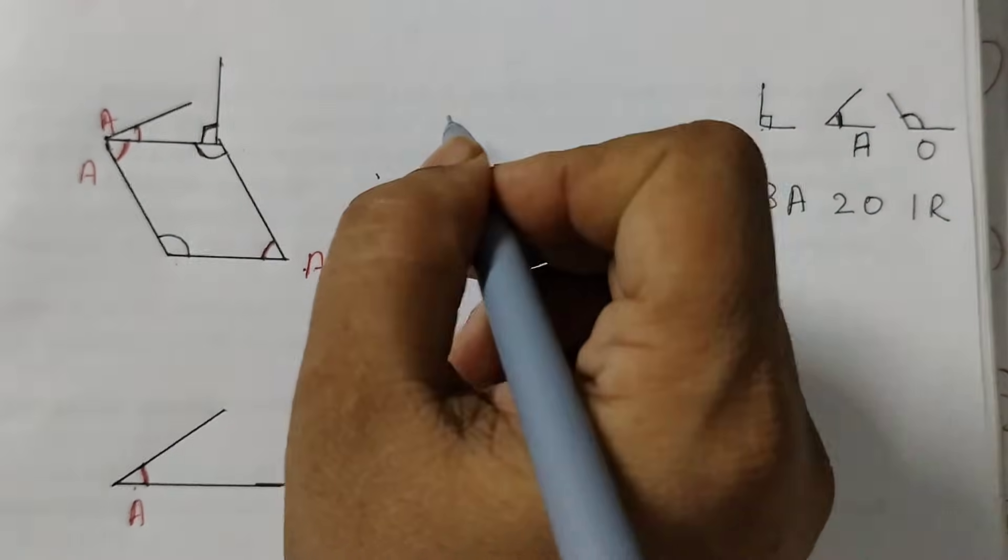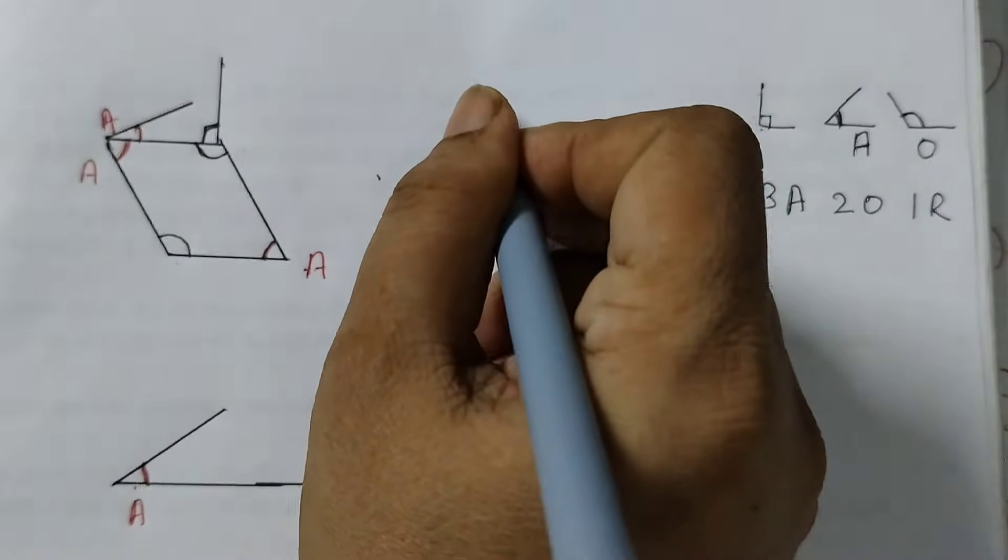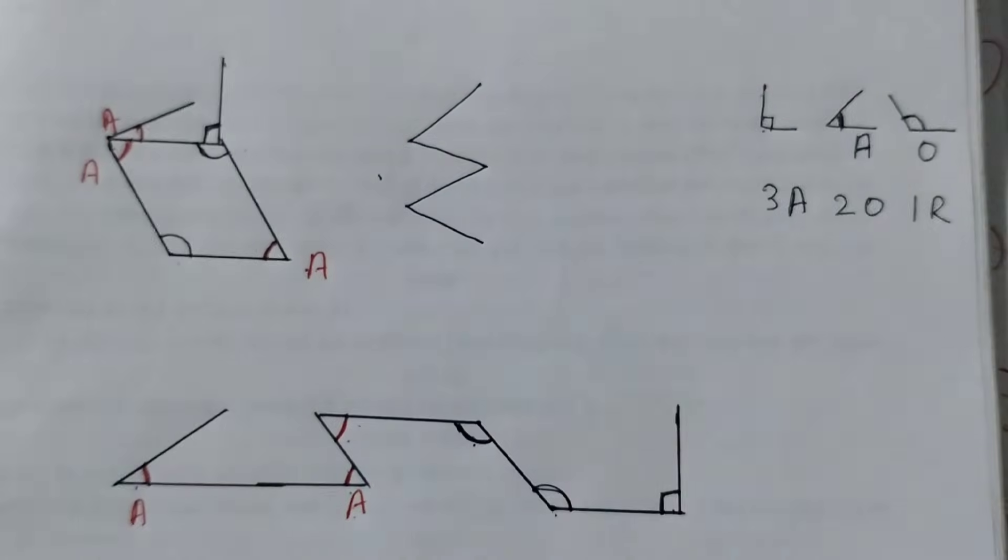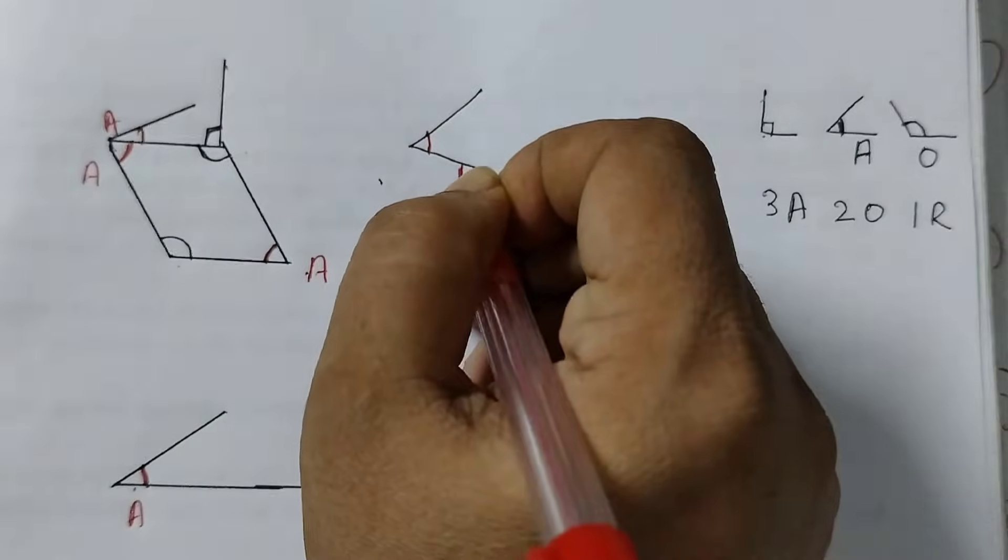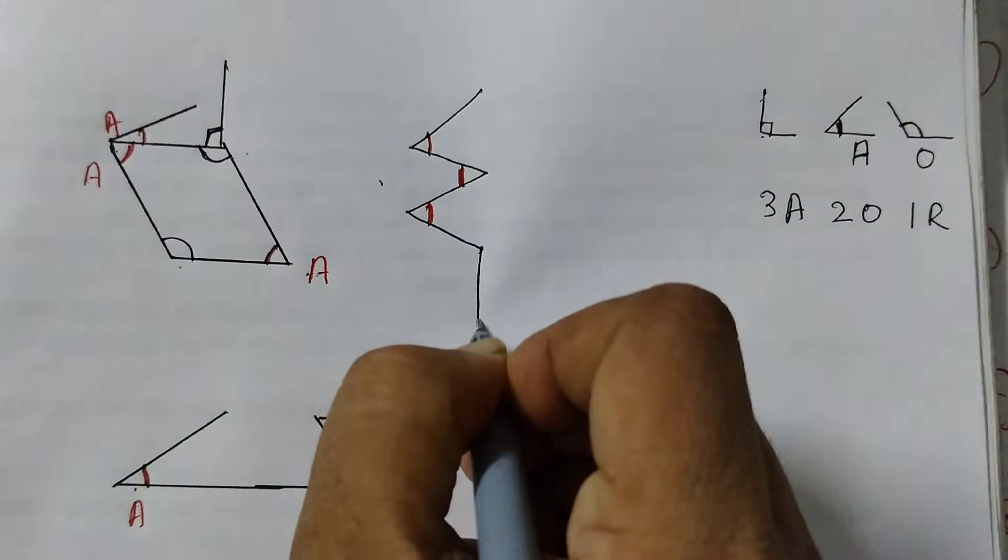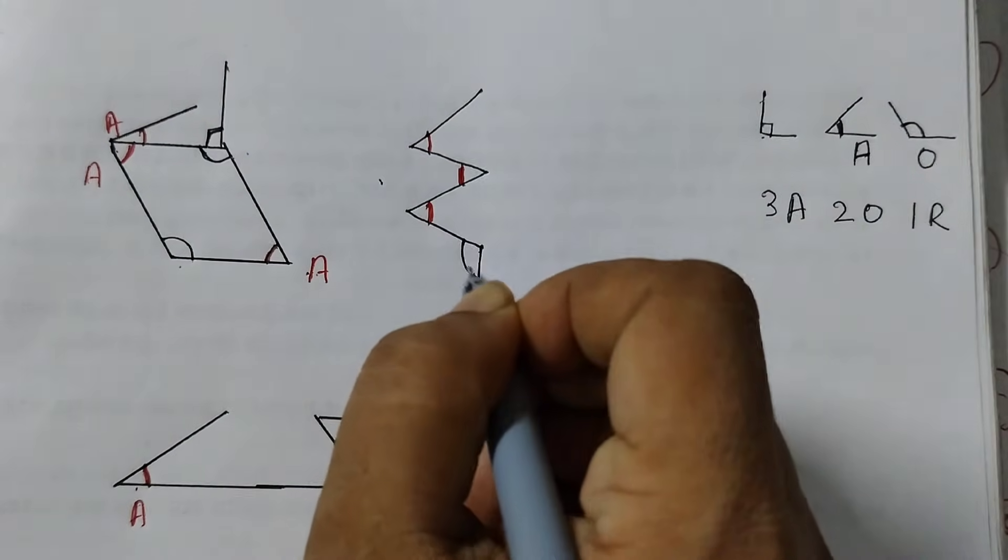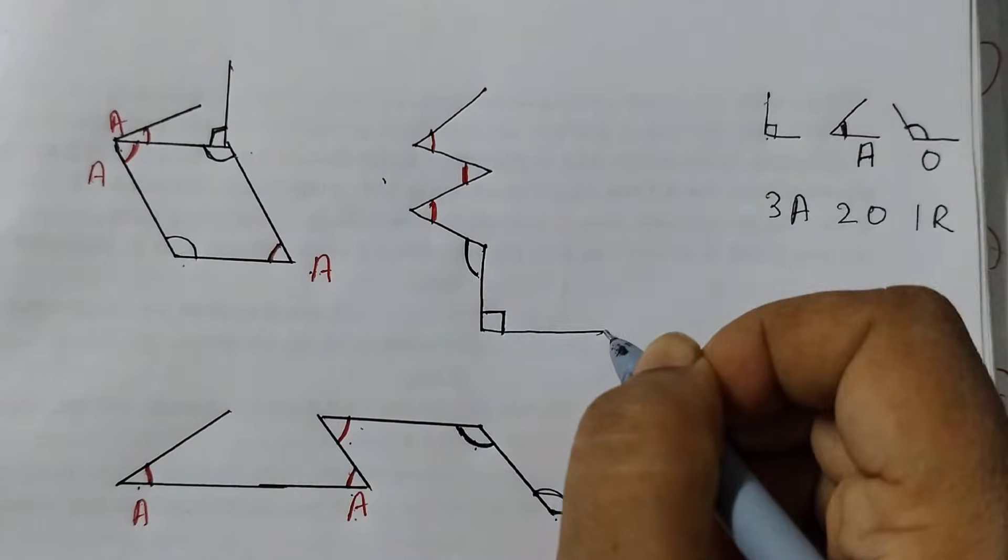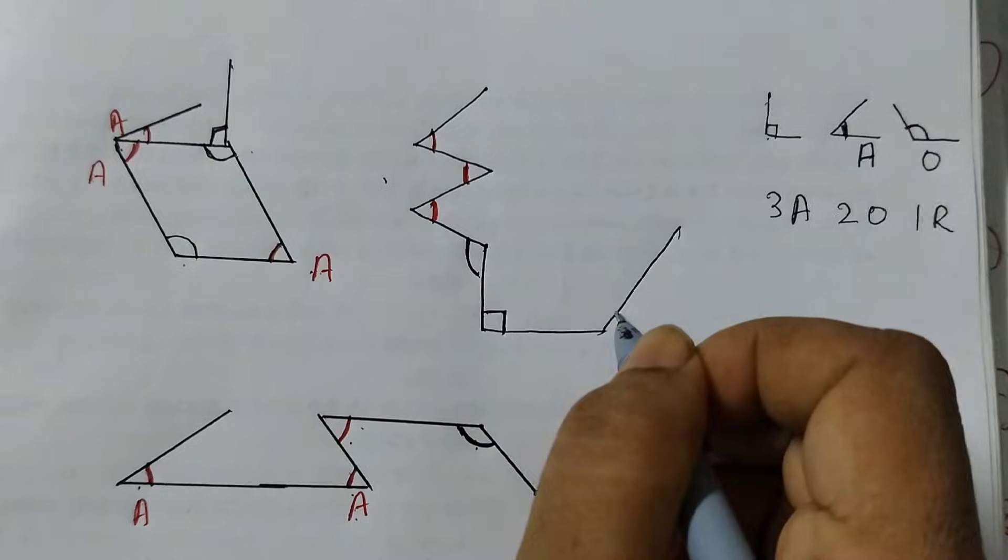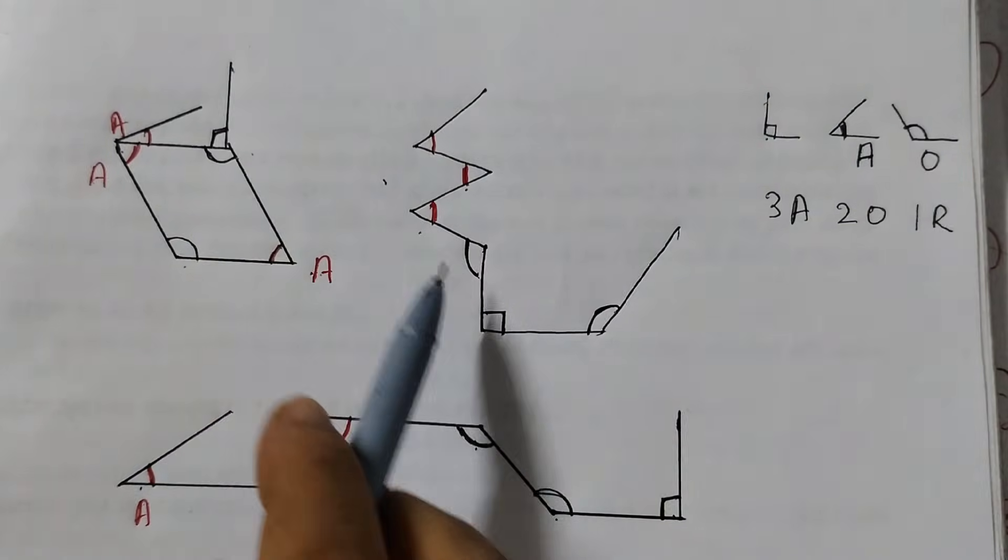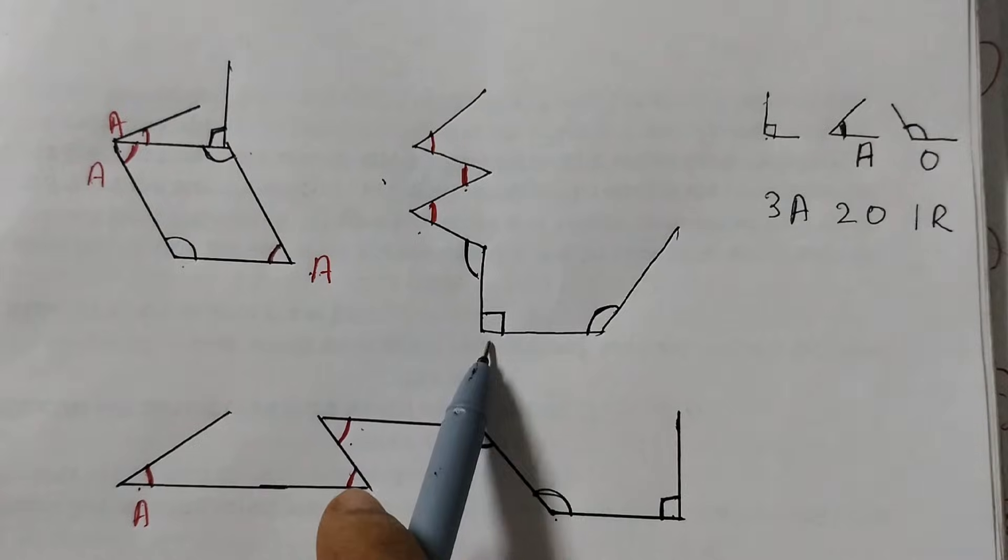I am just using freehand. You can use a ruler to do it. We can do something like this. Acute angle, acute angle, acute angle, obtuse angle, right angle, obtuse angle. Right? Acute, acute, acute, two obtuse and one right.